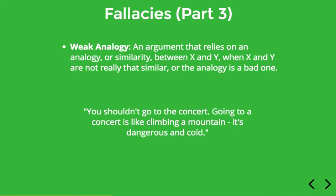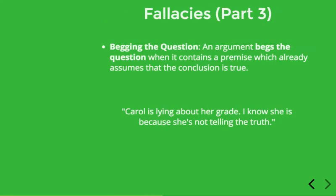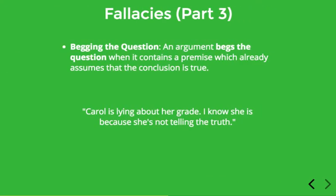Next, let's talk about a kind of argument that comes up a lot in philosophical debates. It can be a little hard to grasp, but hopefully you'll catch on to the idea. It's known as begging the question, and it refers to an argument which contains a premise that already assumes that the conclusion is true, or where the conclusion is kind of just a restatement of the premises.